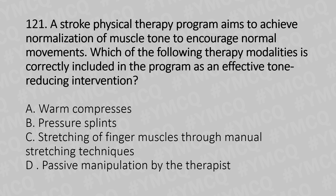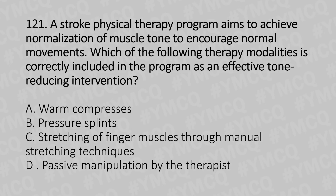Which of the following therapeutic modalities is correctly included in the program as an effective tone-producing intervention? Option A: warm converses. Option B: pressure splints. Option C: stretching of the finger muscles through manual stretching techniques. Option D: passive manipulation by the therapist. The answer is option D — passive manipulation by the therapist.